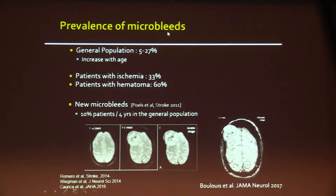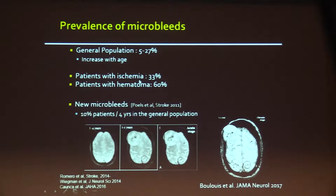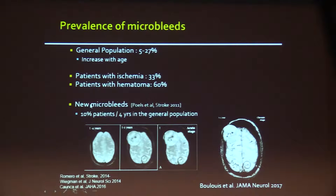The prevalence of microbleeds varies. In the general population it is between 5 and 30%. We know that microbleeds increase with age. Importantly, we find microbleeds in about one third of patients presenting with ischemic stroke, and in about 60% of patients with hematoma. Another interesting point is that in one out of ten patients, every four years there will be a new visible microbleed — this is an example given by Grégoire Gounouis, who works in my group.